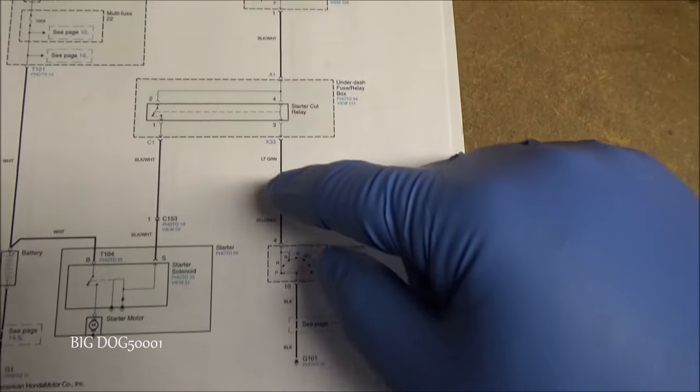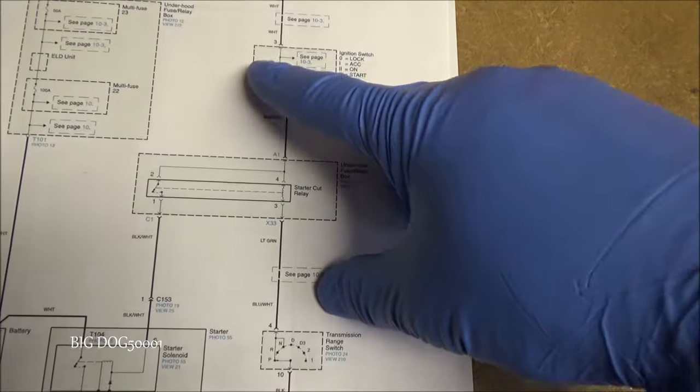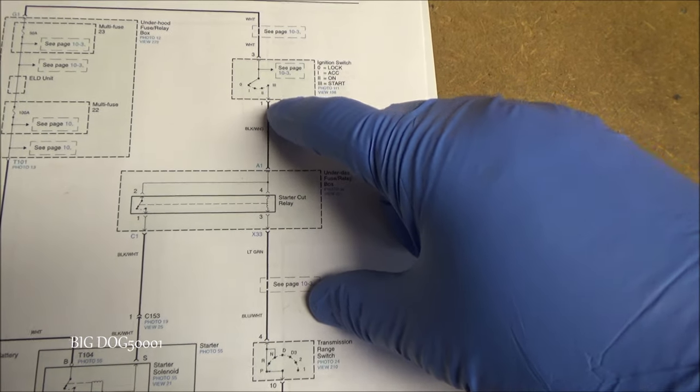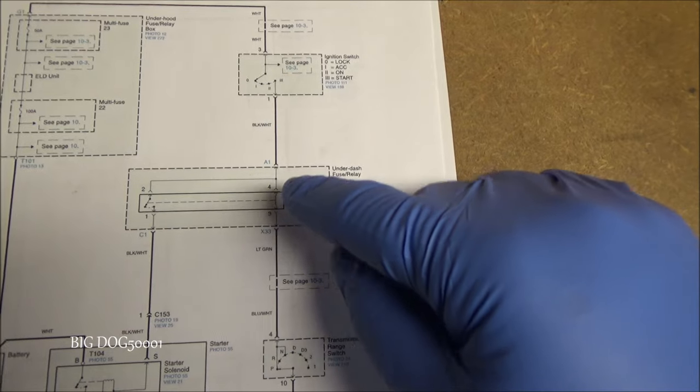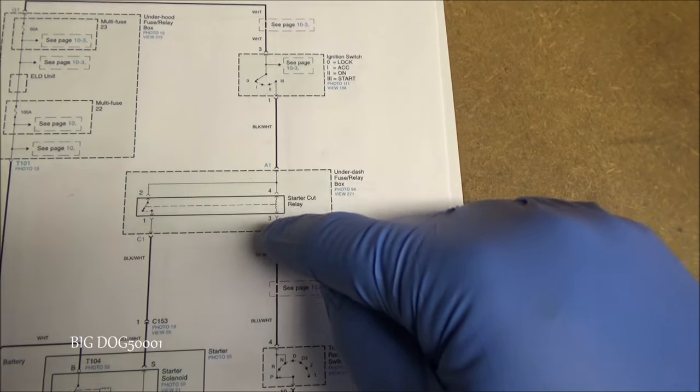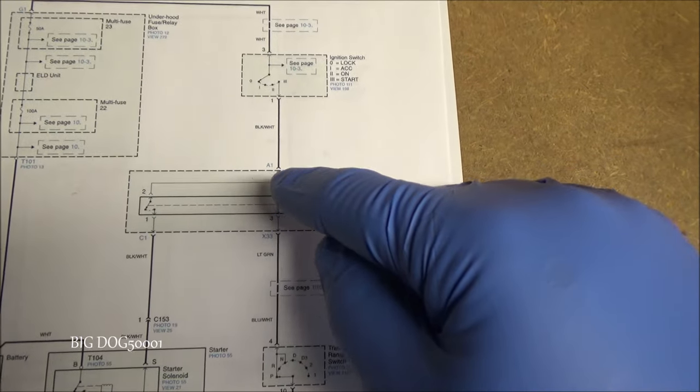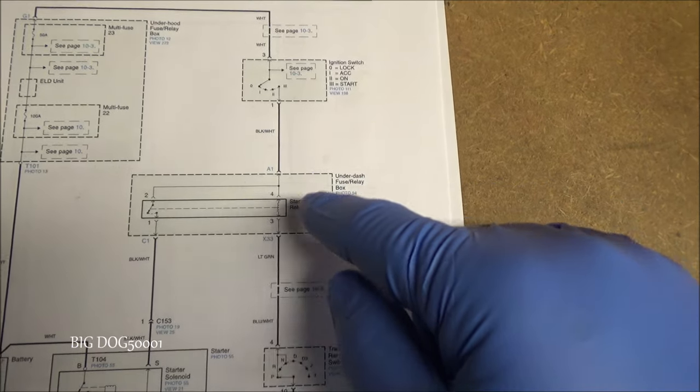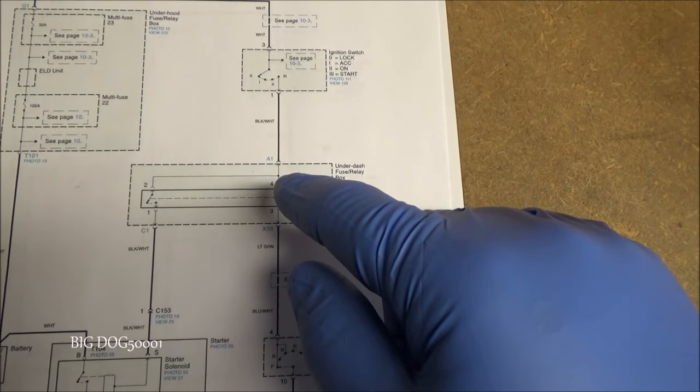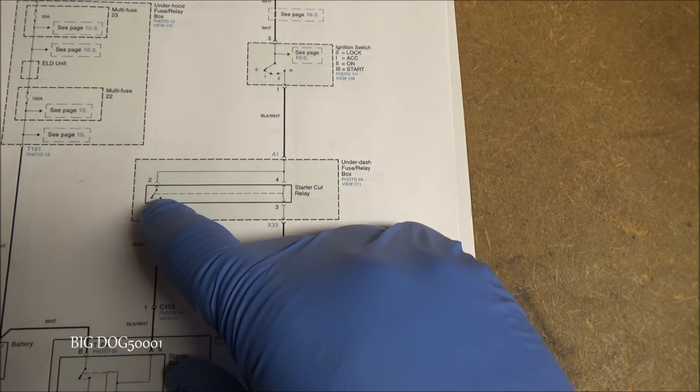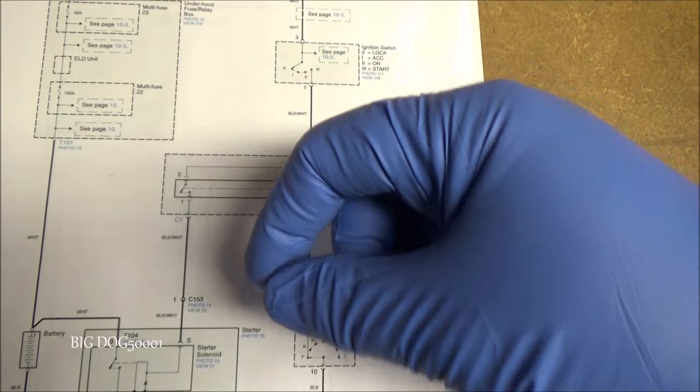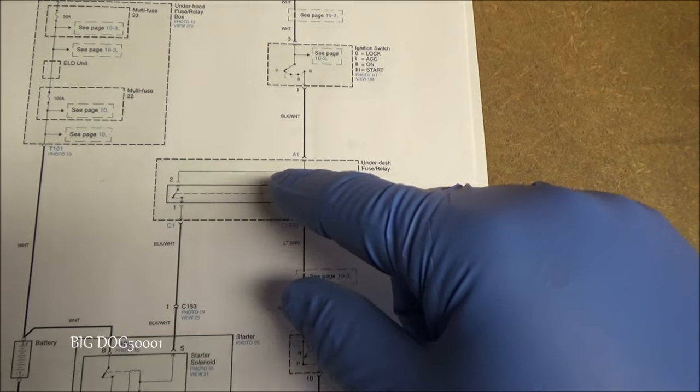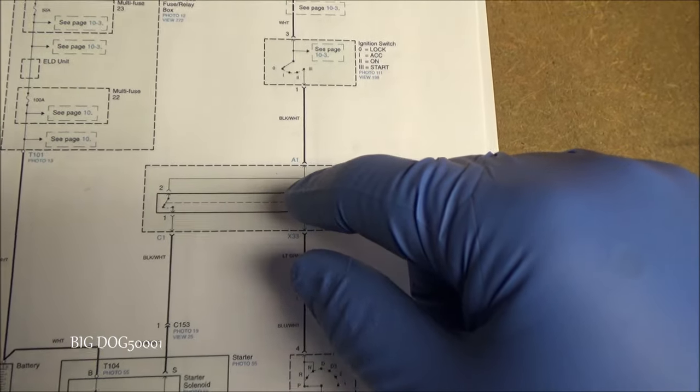As long as we have a ground supplied right here, and we have power once we turn it over to the number three start position, that's going to energize that coil of wire, and it's going to run current through there. Once we start running current through a coil of wire, we're going to create a magnetic field. That magnetic field is going to close this switch. It's just a metal switch inside the relay, and it's going to snap closed once this magnetic field hits it.